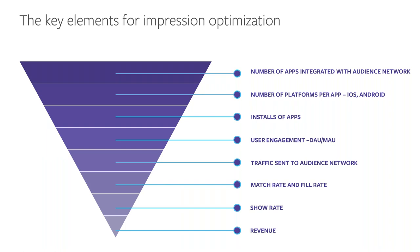For impression optimization, there are many factors that contribute to impressions. There are seven layers in the funnel, and you'll want to ensure that you're reviewing all of these layers as you integrate and optimize with Audience Network. If you have a large number of apps, ensure that you're integrating and optimizing all your apps to maximize your revenue. You'll also want to ensure that you are integrating both iOS and Android platforms. The more daily and monthly active users you can send us, the bigger the impact.